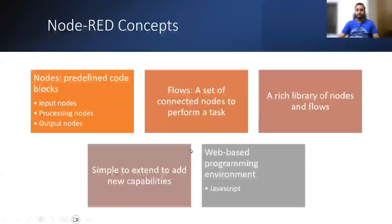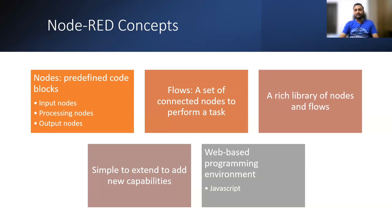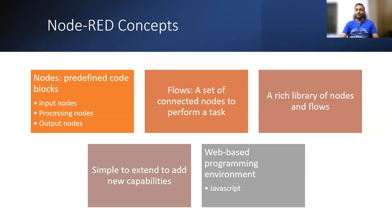Node-RED has predefined code blocks: input nodes, processing nodes, and output nodes — just like a black box. Based on events it will be triggered, and the output will be generated — for example, sending a tweet, sending an SMS, or turning on a bulb. A flow is formed when connected nodes perform a task together. There is a rich library of nodes and flows, and we can extend these to create new capabilities, including custom libraries or functions.